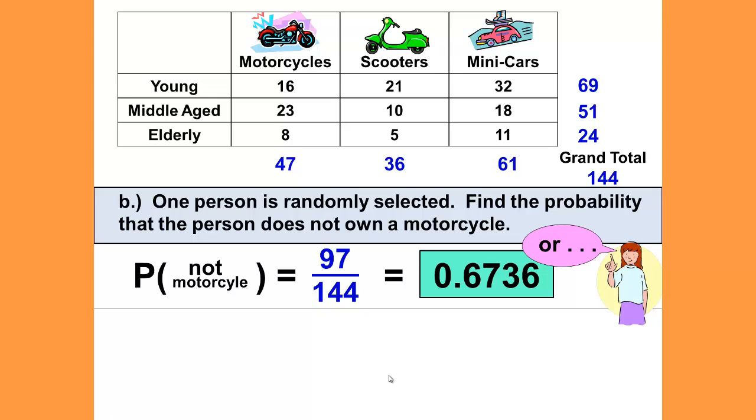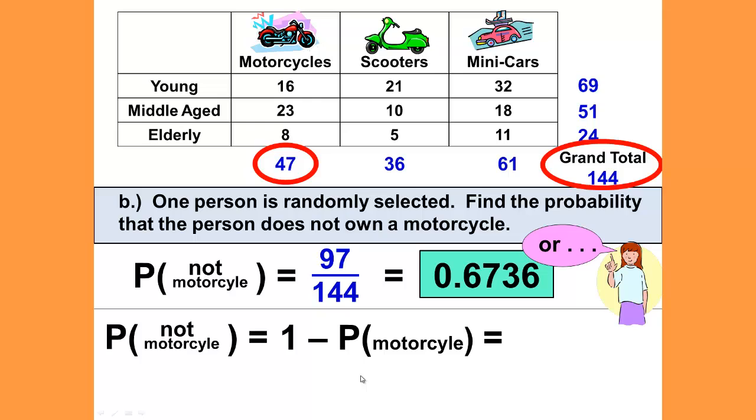Now notice here that there is a different way to do this. Since it says not, this could be done with the complement rule. And the complement rule says to find not a motorcycle, we can do 1 minus the probability that it is a motorcycle. And the number of motorcycles is 47 out of the grand total. So 1 minus 47 divided by 144, which still gives us a final answer of 0.6736, the same as we got before. The two methods, same answer—either way will be fine with your teacher.